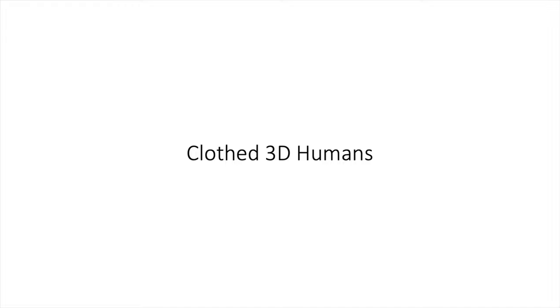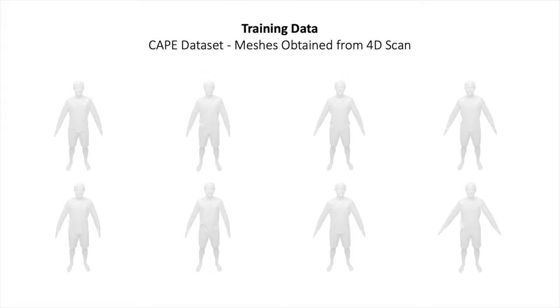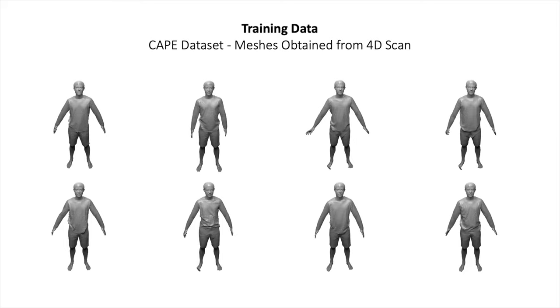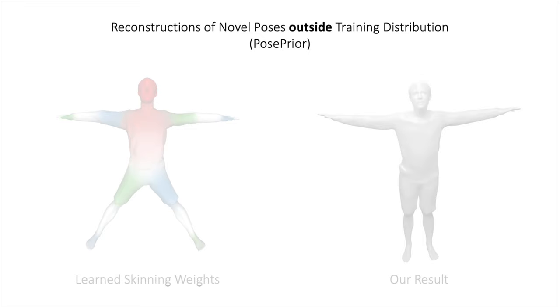We now show results of our method on clothed human subjects. We train our model on the CAPE dataset with meshes obtained from 4D scans. In this setting, we illustrate both the learned skinning weights in canonical space as well as the reconstruction for novel, challenging poses outside the training distribution.